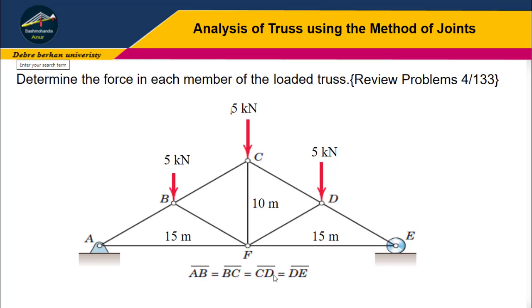Look carefully at the question - the problem is actually simple. We have information that AB equals BC equals CD equals DE, meaning those members are equal. Here we have 15 meters and here is 15 meters, so this is the center of the truss. Here we have 10 meters and the forces acting upon points B, C, and D are equal at 5 kilonewtons. This means this truss is symmetric.